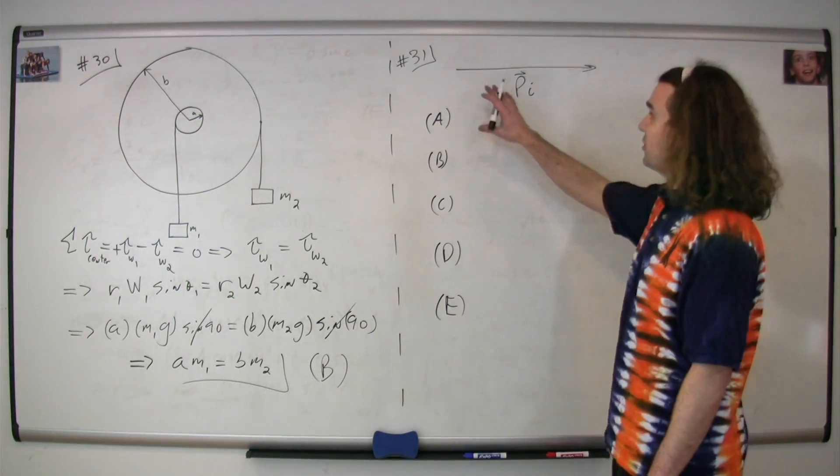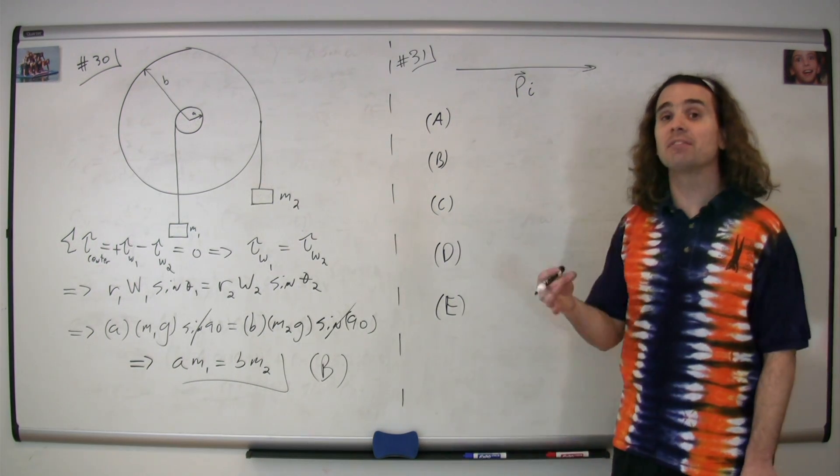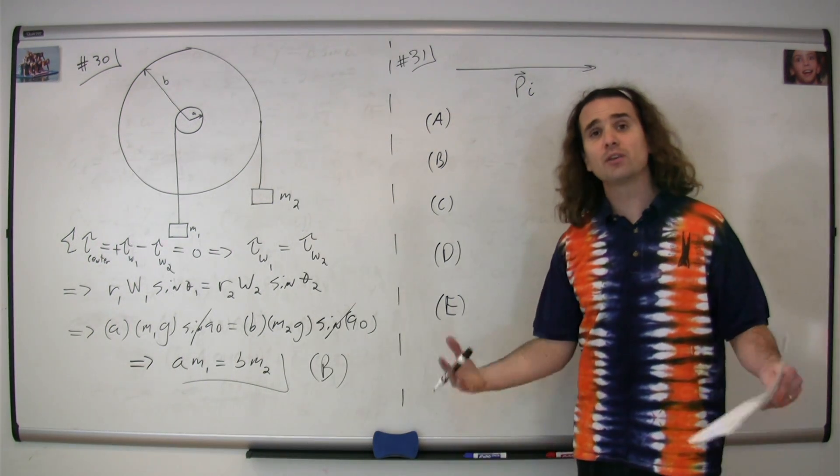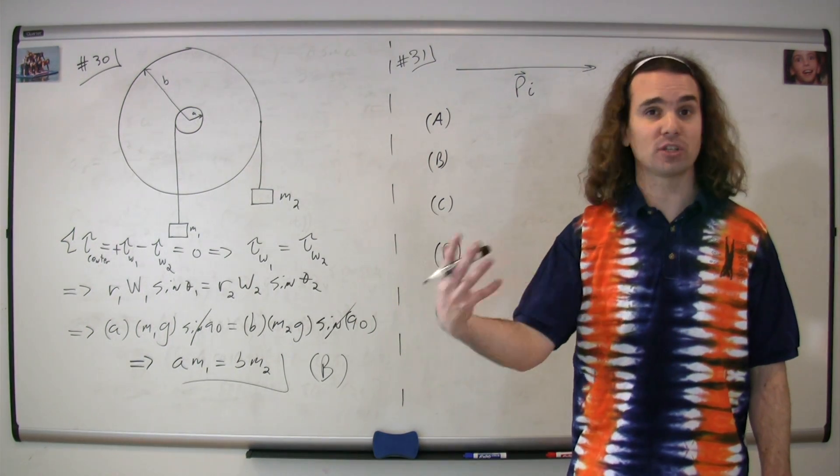Question number 31. The initial momentum of an object can be represented by this arrow. The initial momentum of the other object is zero. The two collide, and then there's a final momentum of the system, which is what we're trying to find.